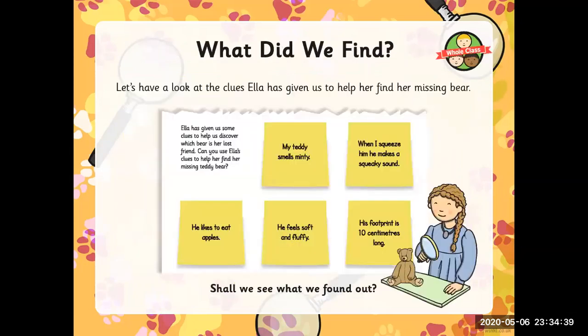Let's have a look at the clues Ella has given us to help find her missing bear. My teddy smells minty. When I squeeze him, he makes a squeaky sound. He likes to eat apples. He feels soft and fluffy. His footprint is 10 centimetres long.